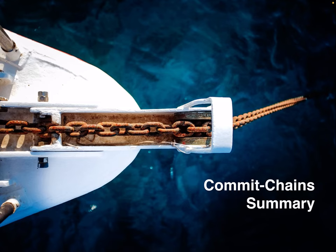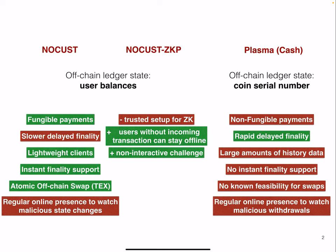Let's summarize commit chains. We'll be looking at only these three commit chains, though there are more — I encourage you to look into roll-ups specifically, they're quite interesting. Some might say these are not off-chain protocols, some say they are, so it's a bit unclear how to categorize them, but they certainly do help scale a blockchain.